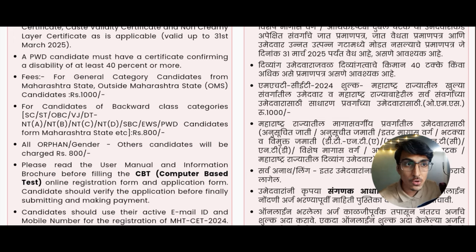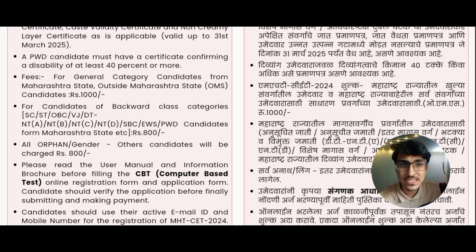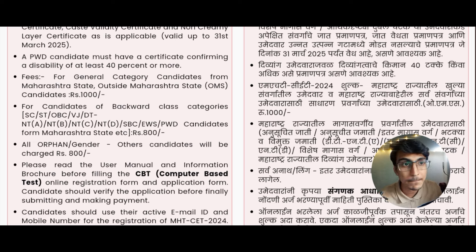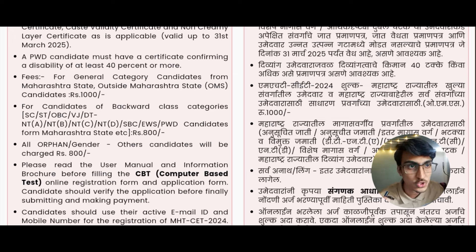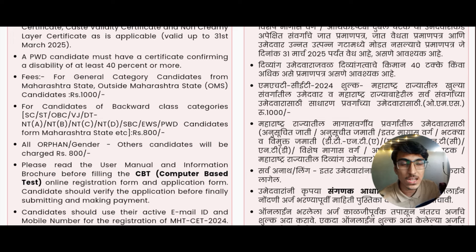For OMS candidates — that is, outside Maharashtra state candidates — the fee is 1000 rupees. Regarding the exam structure, there are two sections: Physics and Chemistry. In the next section, if you have taken Mathematics you will have 50 questions, and if you have taken Biology you will have 100 questions.